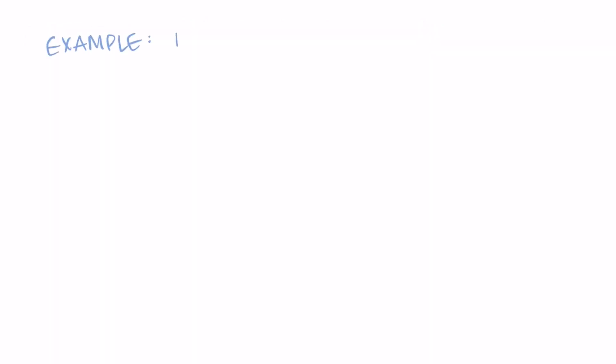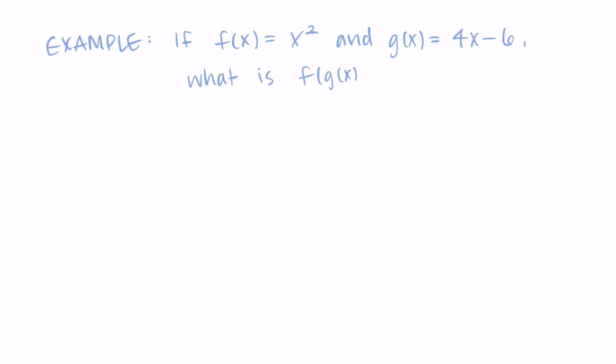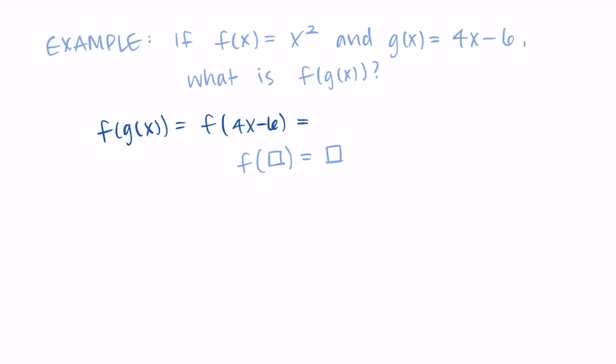Let's try this with an example. Let's say f of x equals x squared and g of x equals 4x minus 6. What is f of g of x? We start with the input g, so the function g is 4x minus 6, meaning we're doing f of 4x minus 6. Since f squares its input, this equals 4x minus 6, quantity squared.